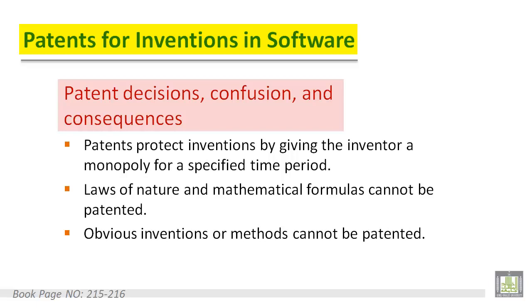Why patent? Patents protect inventions by giving the inventor a monopoly for a specified time period. Laws of nature and mathematical formulas cannot be patented. Obvious inventions or methods cannot be patented. Using a patented innovation or process requires permission from the patent holder, even if another inventor independently came up with the same idea or invention.